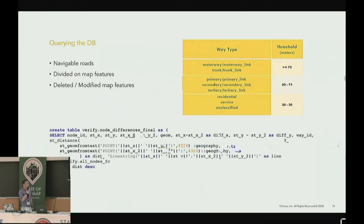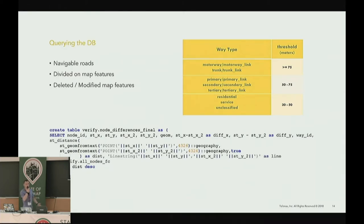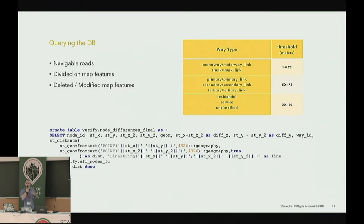When we applied the thresholds, we also took road category into consideration, because we focused especially on navigable roads — those are the most important for a navigation system. We considered only service ways, residentials, motorways, and so on. After filtering the output, we split it into two major categories: deleted map features and modified map features. Each of these categories has subcategories based on the map feature type, such as ways, names, relations, and so on.